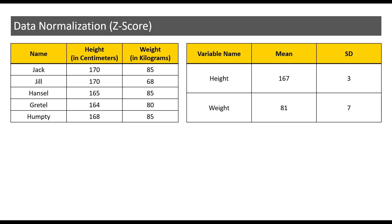The mean height is 167 centimeters and the standard deviation is 3 centimeters. The mean weight on the other hand is 81 kilograms and the standard deviation is 7 kilograms. The mean and the standard deviation of height and weight will help us calculate something called the Z-score. The Z-score will help adjust the scale in this dataset.